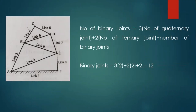One more problem: find the number of binary joints. First, count the links: link one through nine, so total number of links equals nine. Now calculate binary joints. At point F there is one binary joint, and at point C link four and link five join — that is one more binary joint. So totally two binary joints are there.